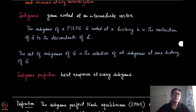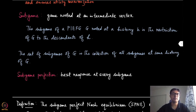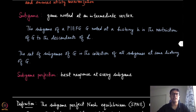We also define the set of all subgames of G, which is the collection of all subgames at some history of G. If we collect together all possible non-terminal histories and look at the corresponding subgames, that list is called the set of subgames of G.